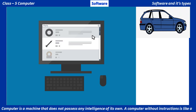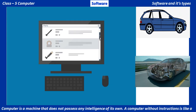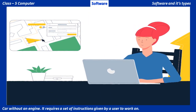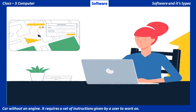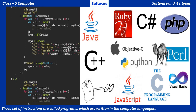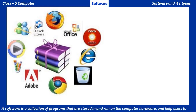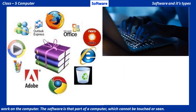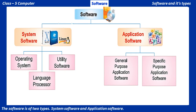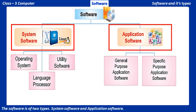A computer is a machine that does not possess any intelligence of its own. A computer without instructions is like a car without an engine. It requires a set of instructions given by a user to work on. These set of instructions are called programs, which are written in computer languages. A software is a collection of programs that are stored in and run on the computer hardware, and help users to work on the computer. The software is that part of a computer which cannot be touched or seen.